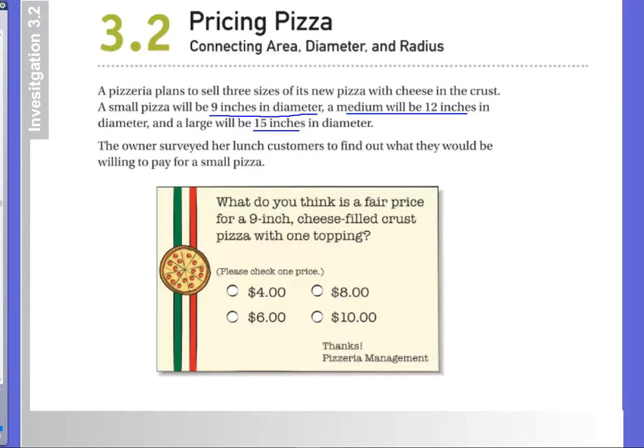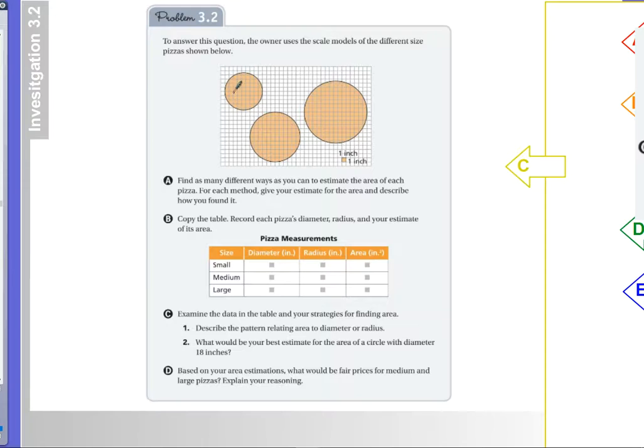Okay, so then let's take a look at this. To answer this question, we have scale models, so if I take a look here, that's 9 inches from here to here. And so the center is right about there. So that means, what is the radius of this circle? Well, that radius is 4.5.